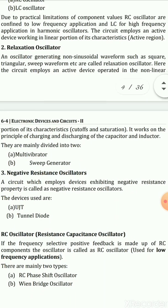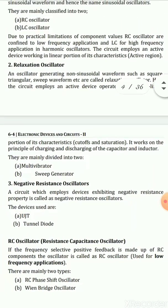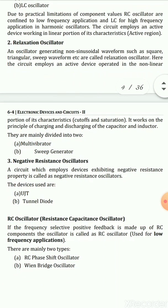Negative resistance oscillators are based on devices that exhibit a negative resistance property. Positive resistance means the device follows Ohm's law. Negative resistance refers to devices that do not follow Ohm's law — meaning when the voltage increases, the current decreases. These types of oscillators will be studied in later semesters.